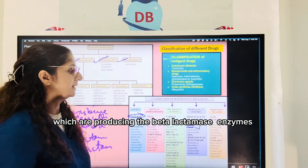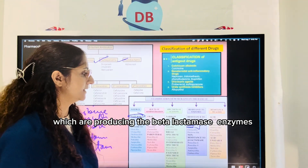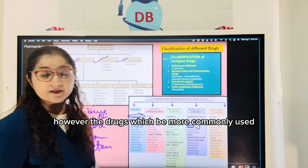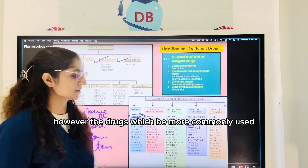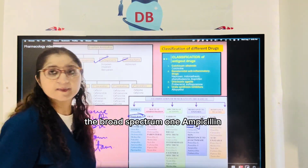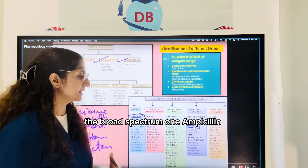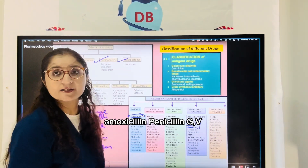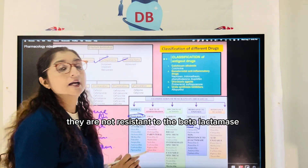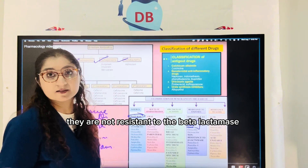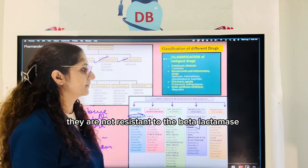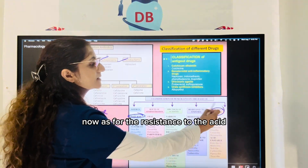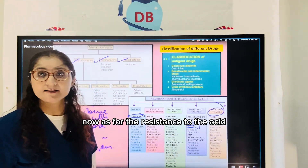The broad-spectrum drugs that are more commonly used — ampicillin, amoxicillin, and penicillin G/V — are not resistant to the beta-lactamase enzyme produced by bacteria.